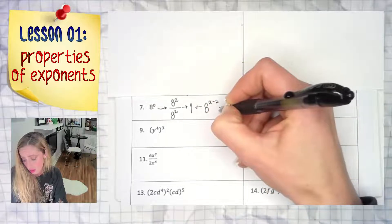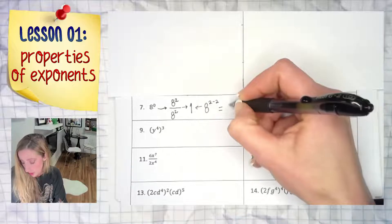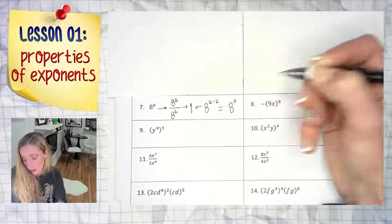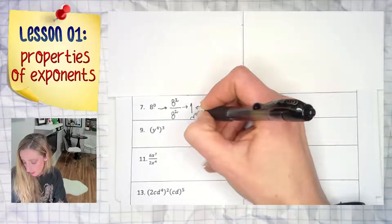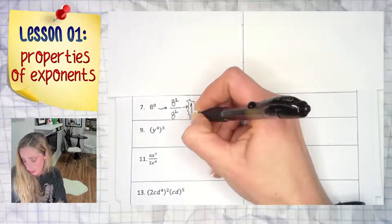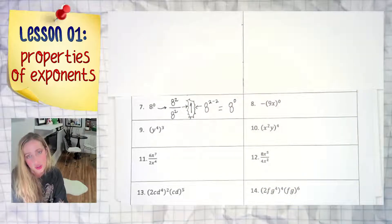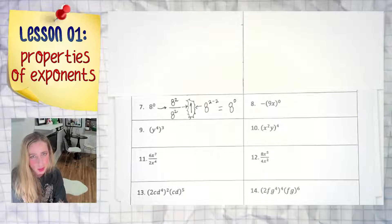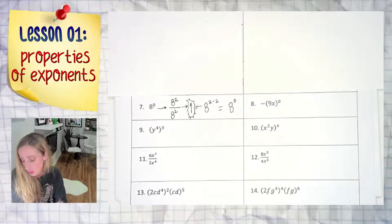And what is 2 minus 2? Zero. Final answer: a big fat one. So if you remembered that 8 to the zero power is in fact one, winner winner chicken dinner.